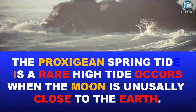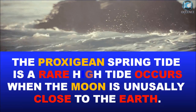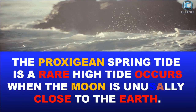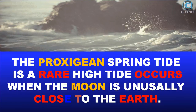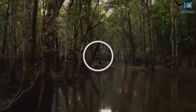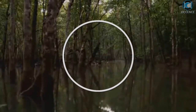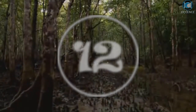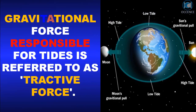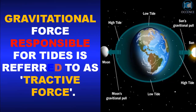The Proxygean spring tide is a rare high tide that occurs when the Moon is unusually close to the Earth. The gravitational force responsible for tides is referred to as tractive force.